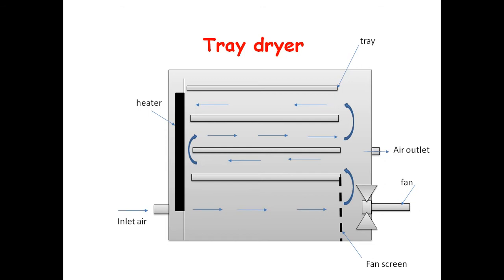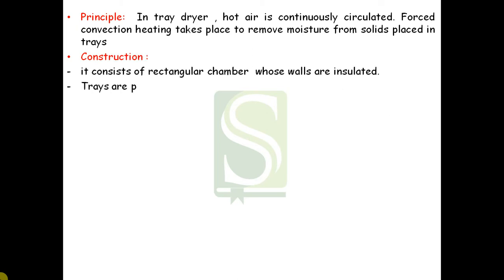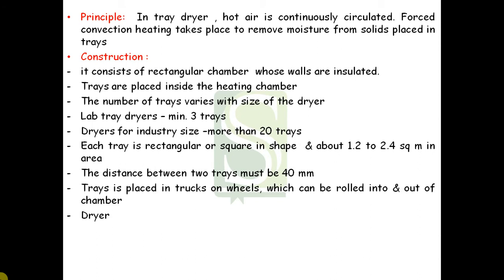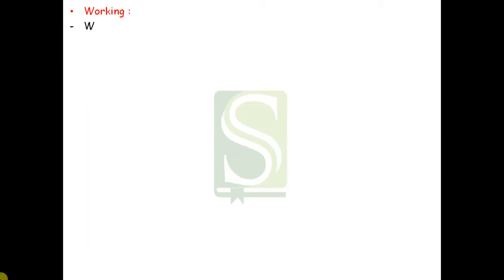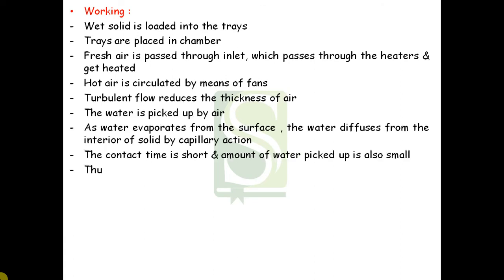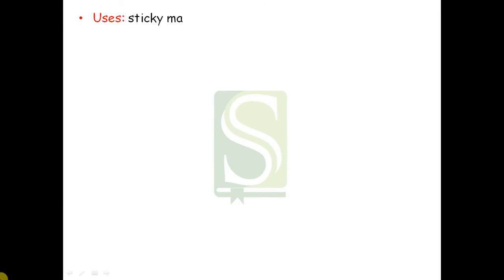A discharge is provided at one end to discharge the air. The air comes out and is taken off from this point. Only 10 to 20% of fresh air is introduced, and the moist air is discharged from the outlet. Constant temperature and uniform airflow over the material can be maintained for achieving uniform drying. This is the principle and construction and working which we have already discussed.